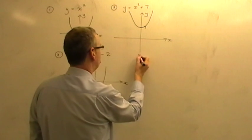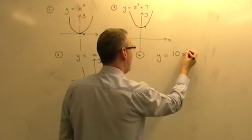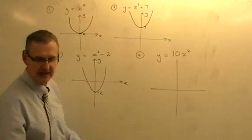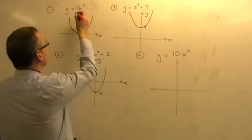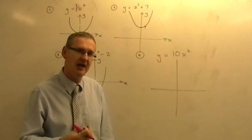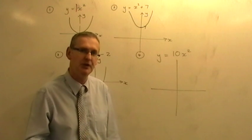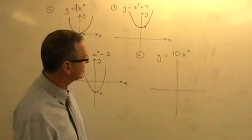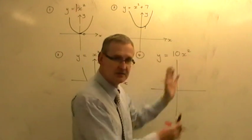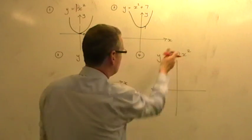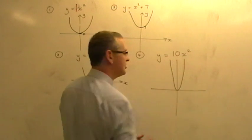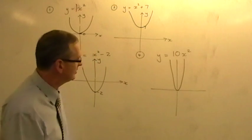Number four: y equals 10x squared. The ordinary x squared graph actually has a one in front of it. When you change the number in front of the x squared, it controls how steep the u is that you draw. So 10x squared is going to be a much steeper u. There's no number on the end, so there's no shift up or down. It stays in the same position but is much steeper than the original.